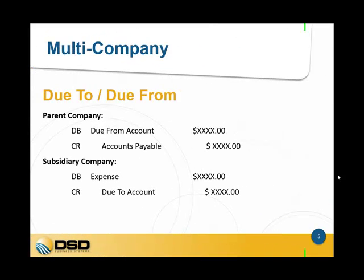Next up, we have an explanation of the due to and due from account. In this example, I'm doing an AP invoice. The parent company creates the invoice and they're the ones that are going to have the open invoice and will pay it. So if they're going to be posting the expense to another company, that other company will have a debit to their expense and the offset will be to a due to account. On the parent company side, they're going to get the AP invoice, so they'll get the credit to accounts payable and the offset there is a debit to the due from account.